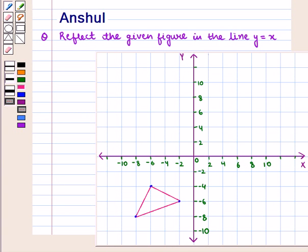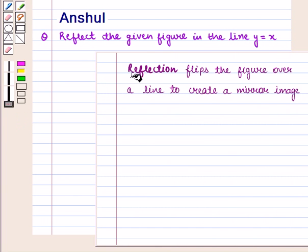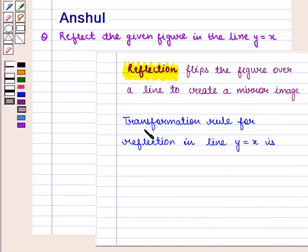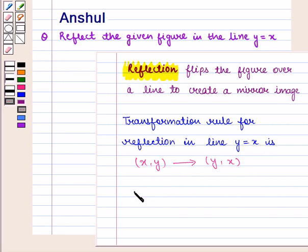Hello and welcome to the session. In this session, we are going to discuss the following question which says: Reflect the given figure in the line Y equals X. We know that reflection flips the figure over a line to create a mirror image. The transformation rule for reflection in line Y equals X is given by: (X, Y) transforms to (Y, X). This result will work out as the key idea to solve the given question.